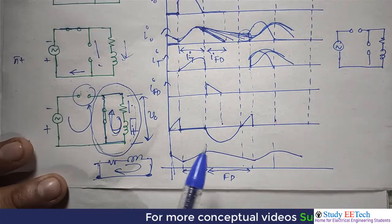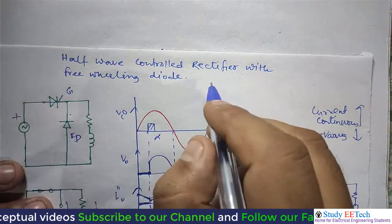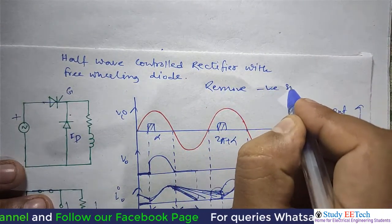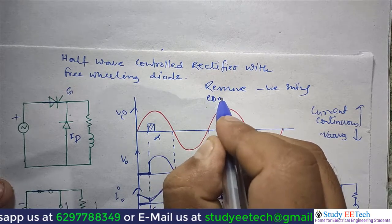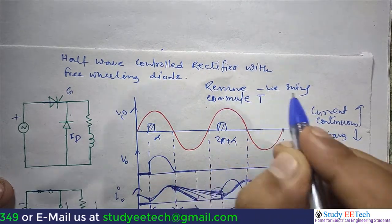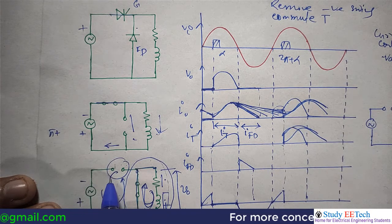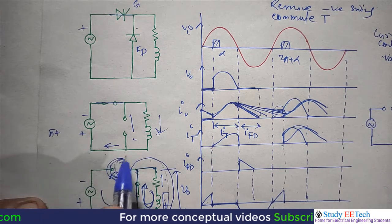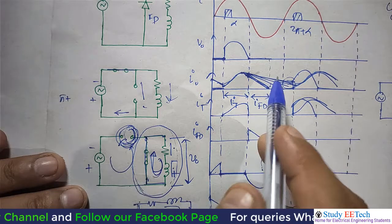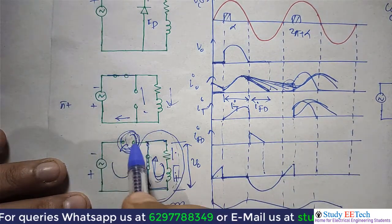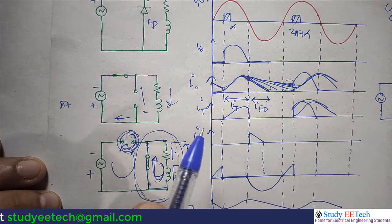The freewheeling diode has two actions: one is to remove the negative swing in output voltage, making it zero instead of negative; and the second is to commutate the thyristor — that is, to turn it off — because the moment the freewheeling diode starts conducting, the current through the thyristor becomes zero and it immediately turns off. So the two functions of the freewheeling diode are: remove negative swings and commutate the thyristor.